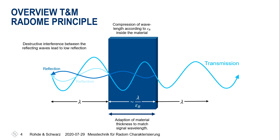So how do we perform material characterization? There are basically two ways to characterize material using the QAR50. Looking at this slide, we can understand why and how these methods work. We have the material depicted in blue, and we have the transmitted signal and the reflected signal at all the transitions between the different layers.